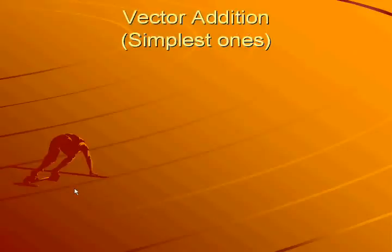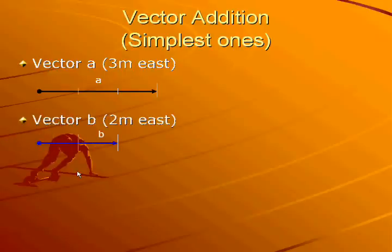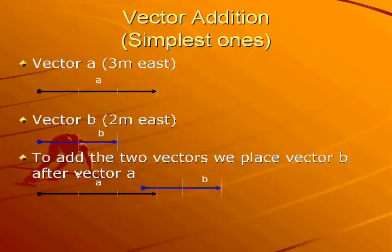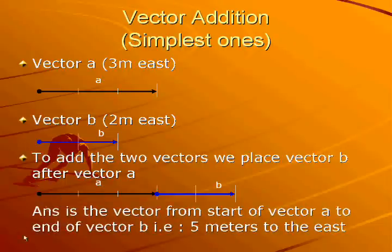Here is a simple example of adding two vectors together. The first is vector A, which is a displacement vector of 3 meters to the east. The second vector is vector B, which is a displacement vector of 2 meters to the east. To add the two vectors we place vector B after vector A. Here is vector A, and here is vector B being placed at the end of vector A. The answer is the vector from the start of vector A to the end of vector B — that is a vector of 5 meters to the east.